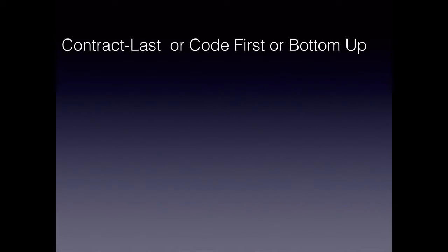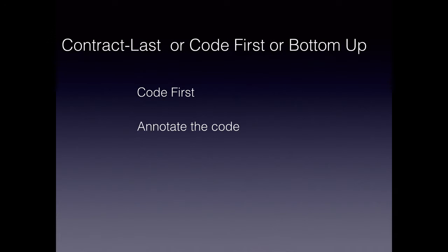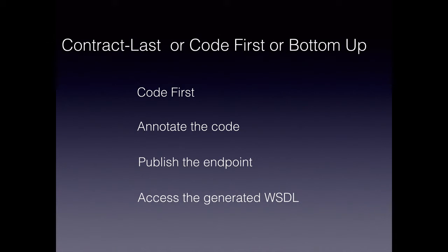The second approach is the contract last, or code first, or bottom-up approach. This is where we create the code first — the classes, interfaces, etc. We then annotate this code; in case of Java, we annotate them with JAX-WS annotations and JAXB annotations. We then publish the endpoint and the web services stack will generate the WSDL file from our code on the fly.